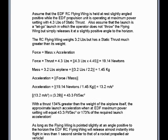Assume the EDF RC flying wing is held at rest slightly angled positive while the EDF propulsion unit is operating at maximum power setting with 4.3 pounds of static thrust. Also assume a let-go launch in which the operator simply releases the flying wing at a slightly positive angle to the horizon. The RC flying wing weighs 3.2 pounds but has static thrust much greater than its weight. Force thrust is mass airflow times acceleration. We take a force thrust of 4.3 pounds and convert to newtons by multiplying 4.3 times 4.45, which equals 19.14 newtons.